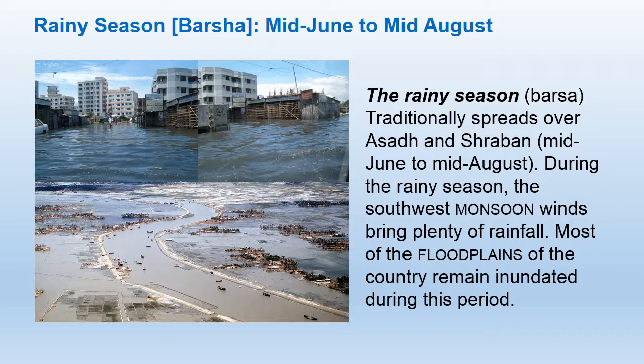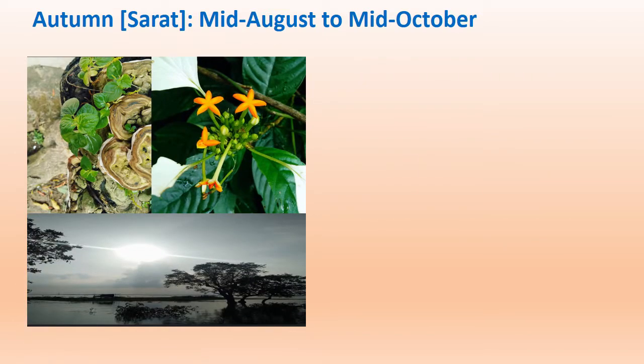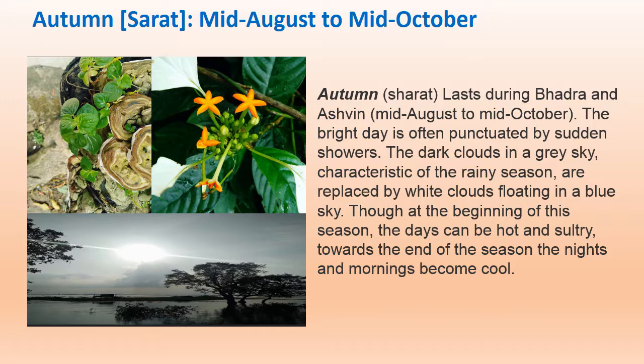After the rainy season we find autumn, called Sharath in Bangla. It starts from mid-August and continues up to mid-October. In this season the weather becomes stable — a little cloud and slow, infrequent rain. Flowers and a lot of vegetables come up, so people enjoy this season very much after the devastating rainy season. Sharath has two months: Bhadra and Ashin.